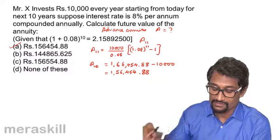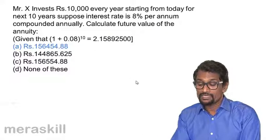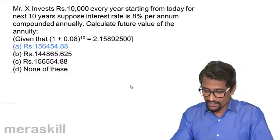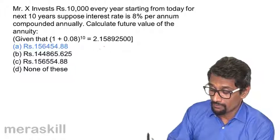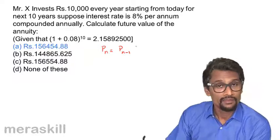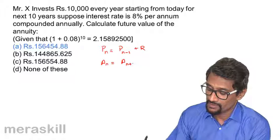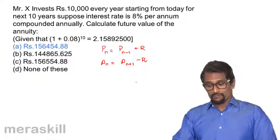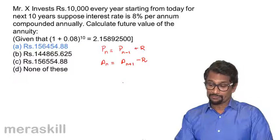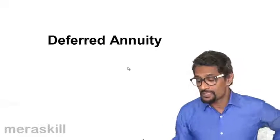So this way we can calculate advanced annuity. To summarize: when calculating the present value P(n), you calculate P(n-1) and then add R. For the future value A(n), you calculate A(n+1) using the standard formula and then subtract R. These are the key rules for advanced annuity calculations.